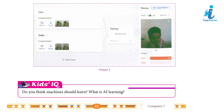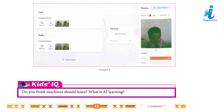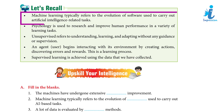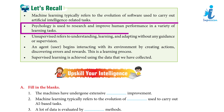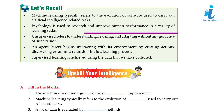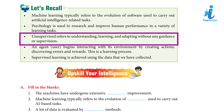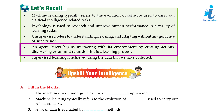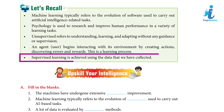Let's recall: Machine learning typically refers to the evolution of software used to carry out artificial intelligence-related tasks. Psychologists use models to research and improve human performance in a variety of learning tasks. Unsupervised refers to understanding, learning, and adapting without any guidance or supervision. An agent or user begins interacting with its environment by creating actions, discovering errors and rewards — this is a learning process. Supervised learning is achieved using the data that we have collected.